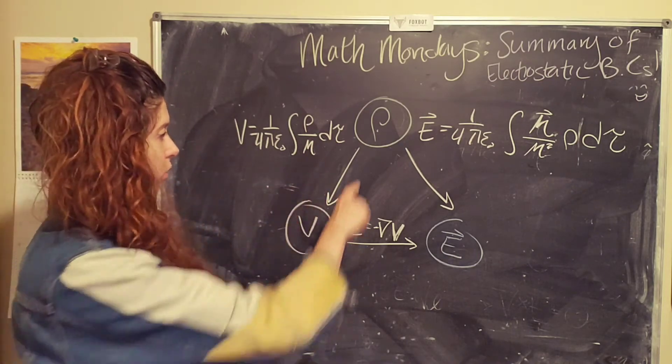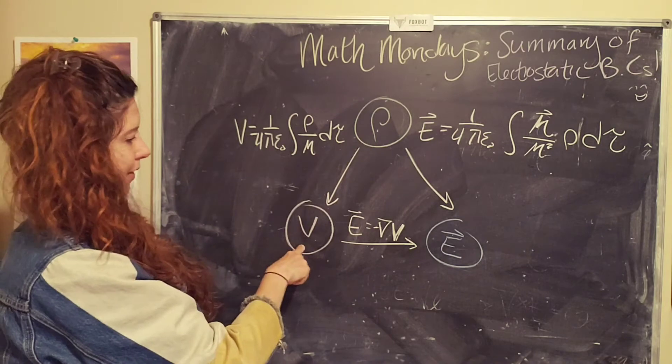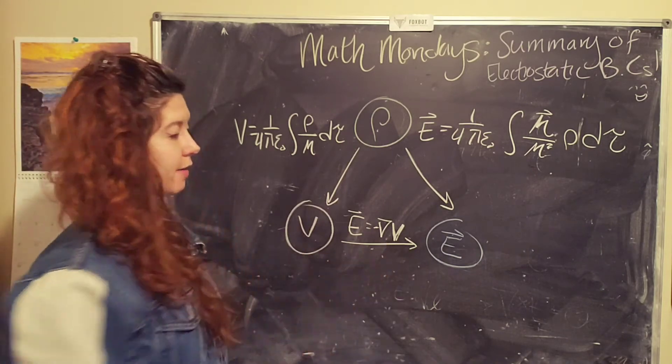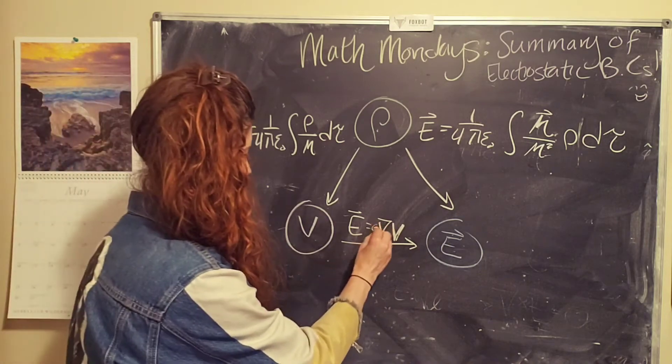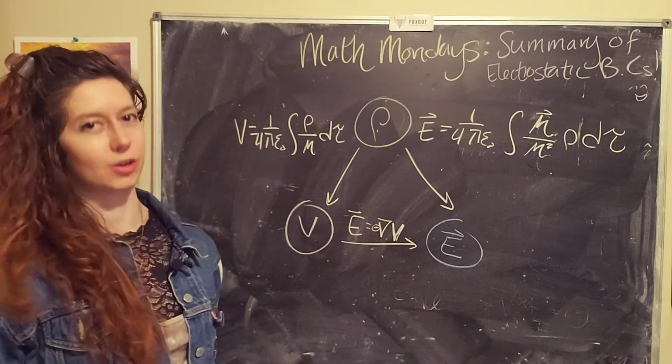So this is, again, a much simpler integral. So you can go from here, get the electric potential, and then just take the divergence, remember the negative sign. Those are always things I forgot. And then you can get the electric field.